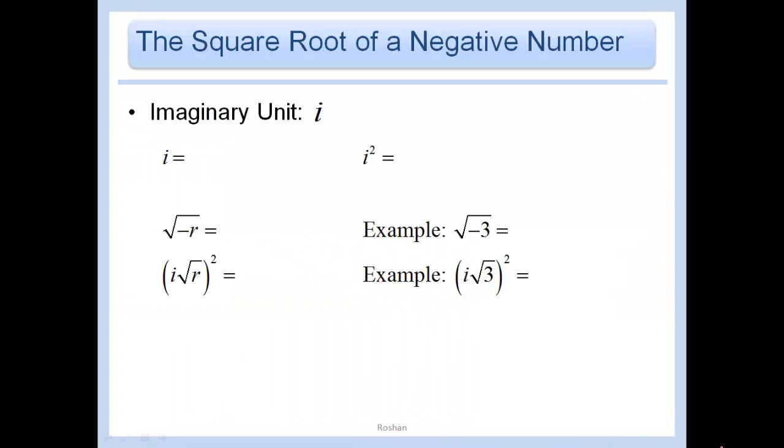As we've discovered, not all quadratic equations have real number solutions. For example, if we're trying to solve something like x squared equals negative 1, we have been saying there is no real number solution. But today we're going to figure out how to solve this.